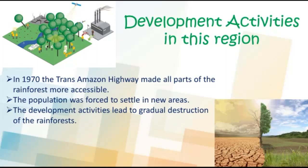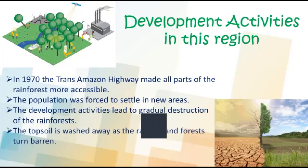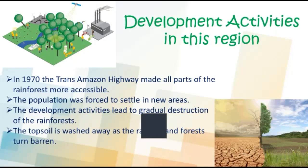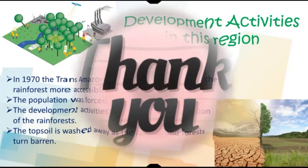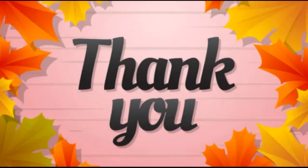The development activities are leading to the gradual destruction of the biologically diverse rainforest. It is estimated that a large part of the rainforest has been disappearing annually in the Amazon Basin. The topsoil is washed away as it rains, and the lush green forest turns into a barren landscape. Thank you.